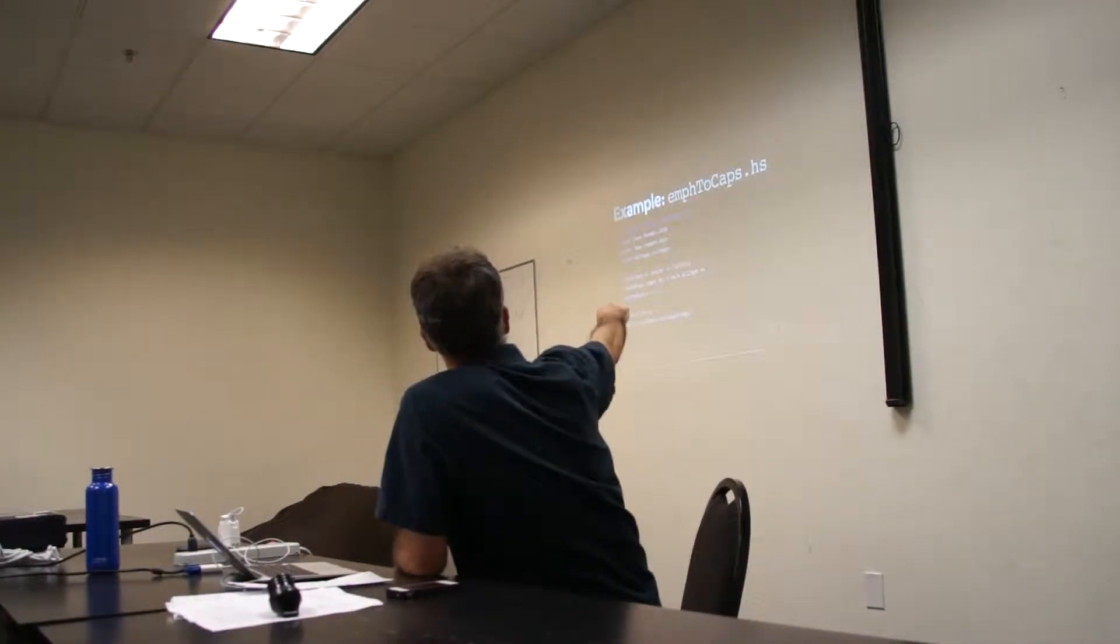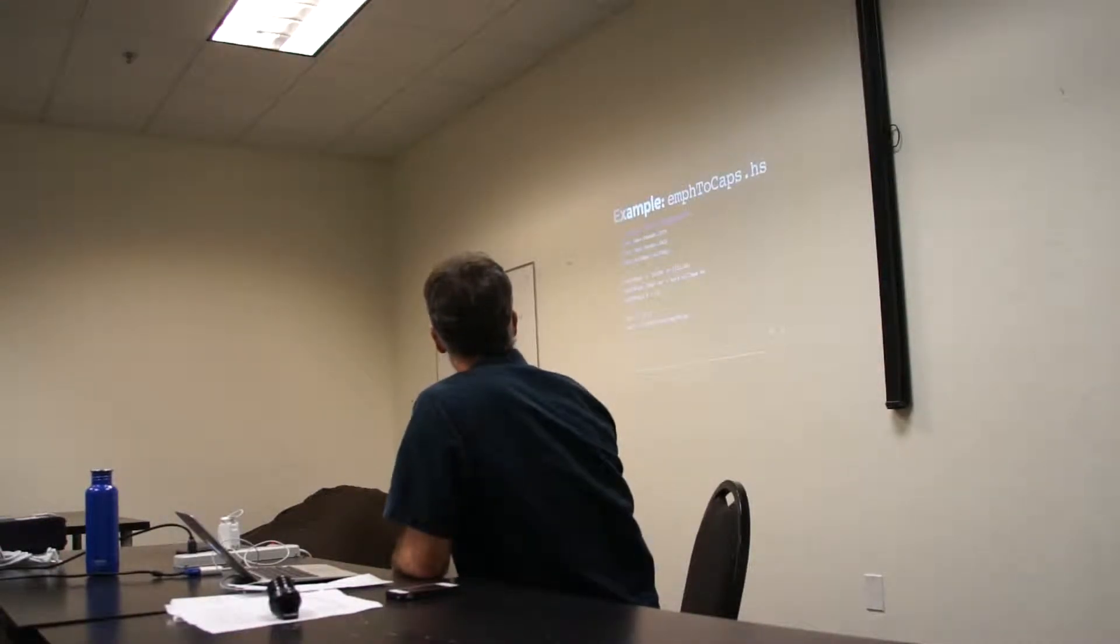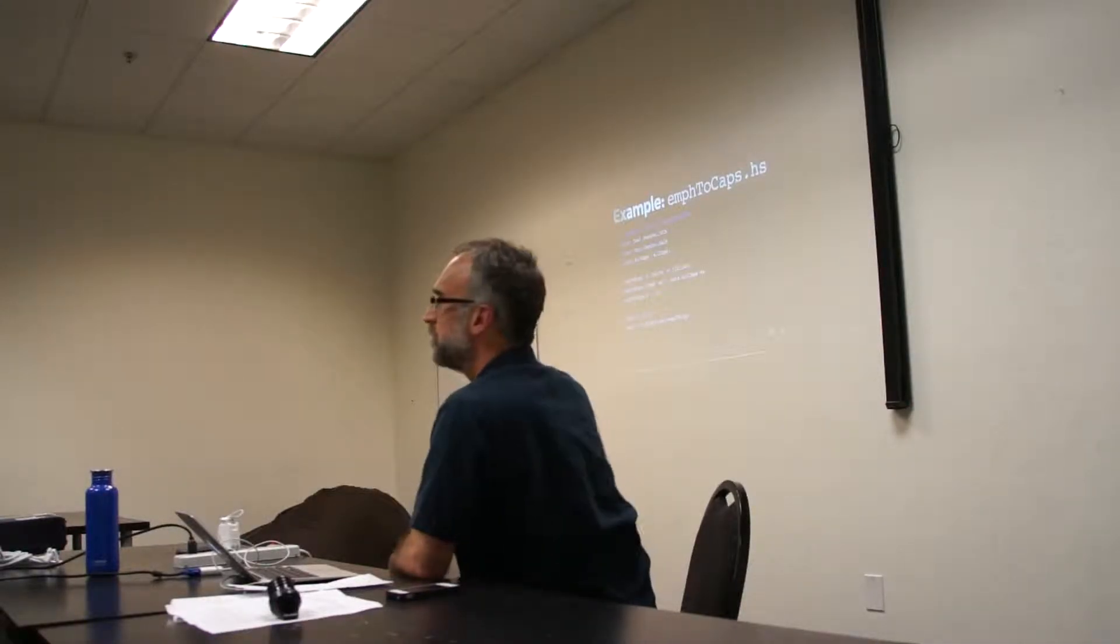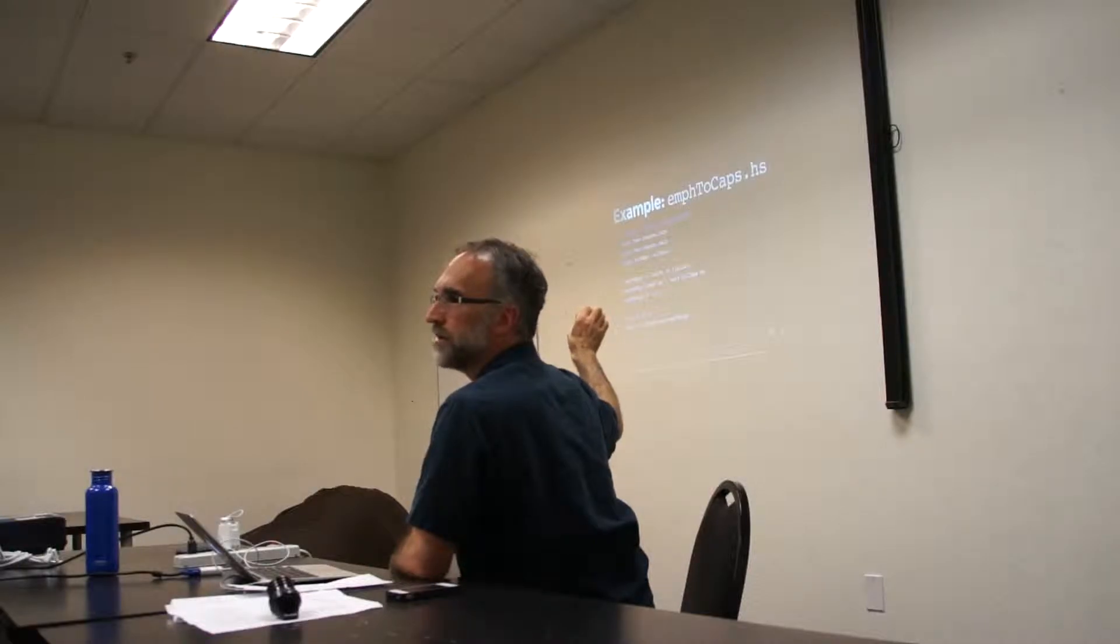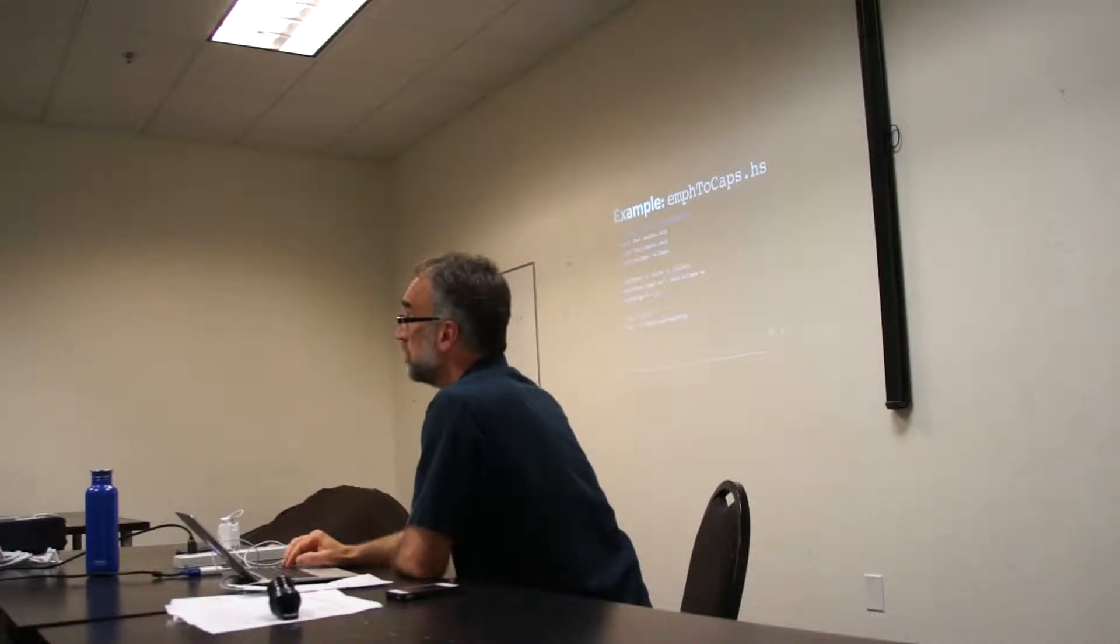So that's the whole program. It's very simple. If we find an emph, we walk all caps on the contents, and that gives us a list of inlines. Otherwise, we just get a list with the thing we had, because we don't want to mess with it, and then we just say toJSON filter that function, and we get a program that you can use with the filter option in pandoc.